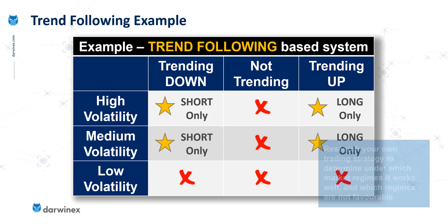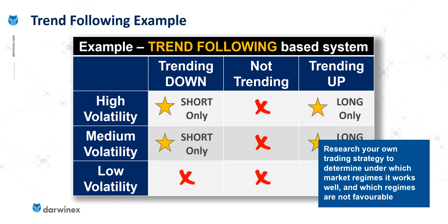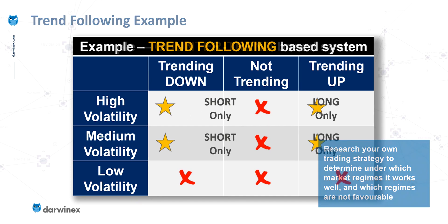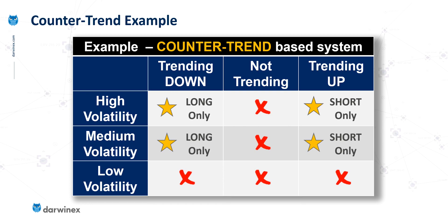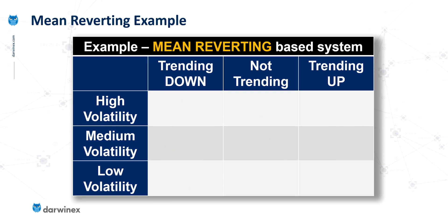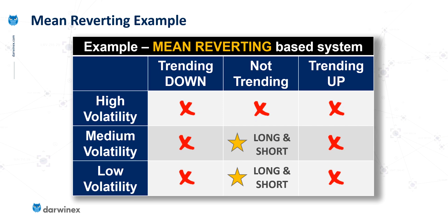To reiterate: the first stage is to perform research using your own strategy to determine which market regimes it works well in and which it doesn't. Then you take that information and use it in your live trading system. Now, if instead of a trend following system you've developed a counter trend system, you might find that those results are reversed. And for a mean reversion type system, your research might determine that your system doesn't work well when the market is trending either downwards or upwards, and that it also suffers when volatility is particularly high. But you might find that both long and short trades perform equally well in the remaining categorizations — and again, this research tells you when you should be trading your system.